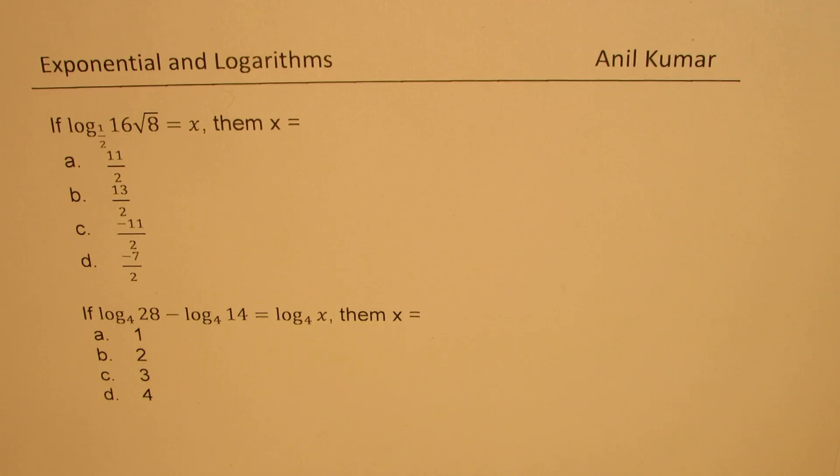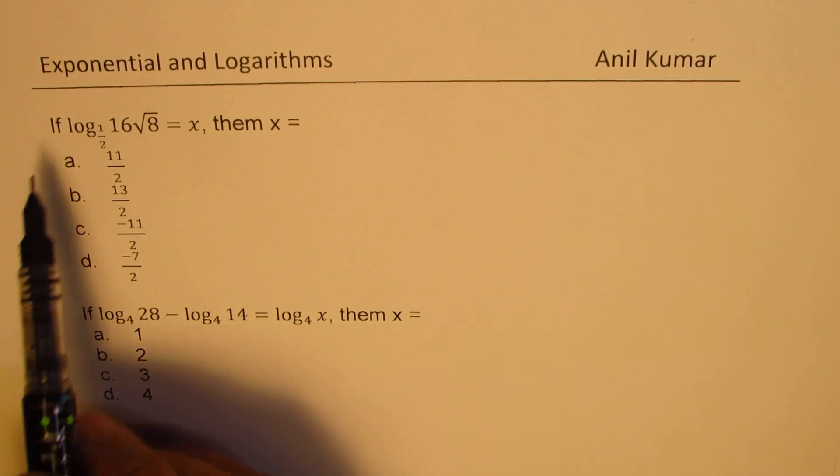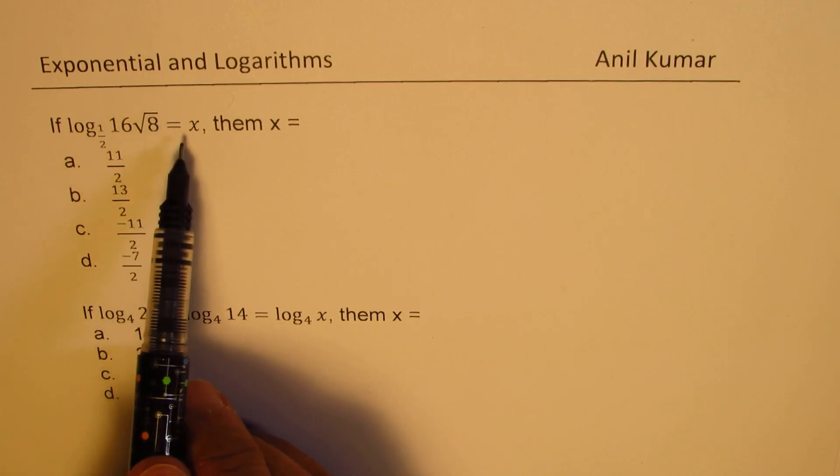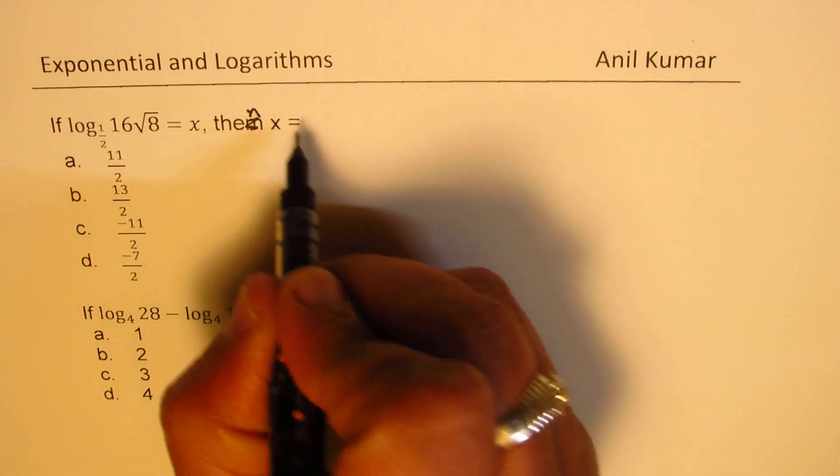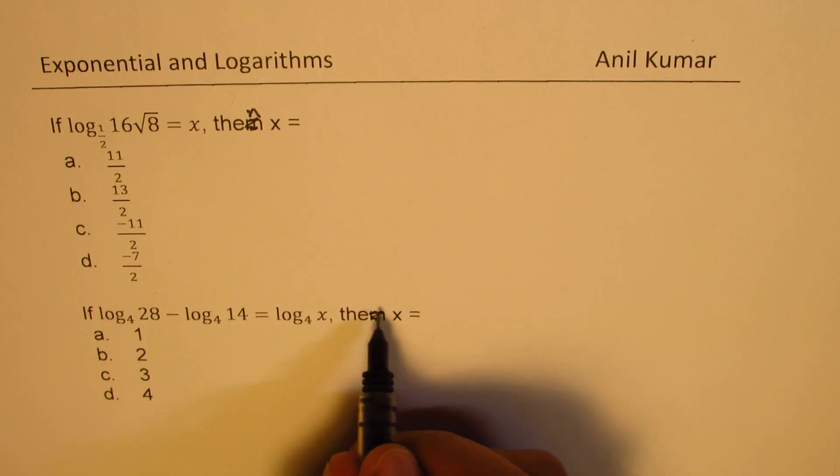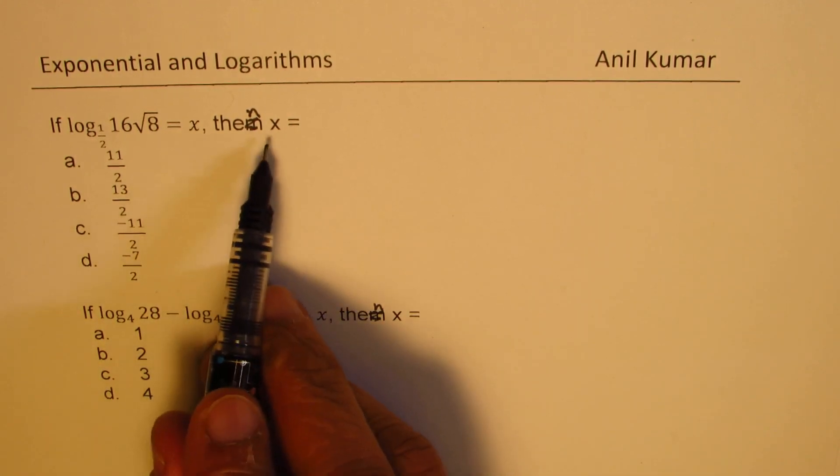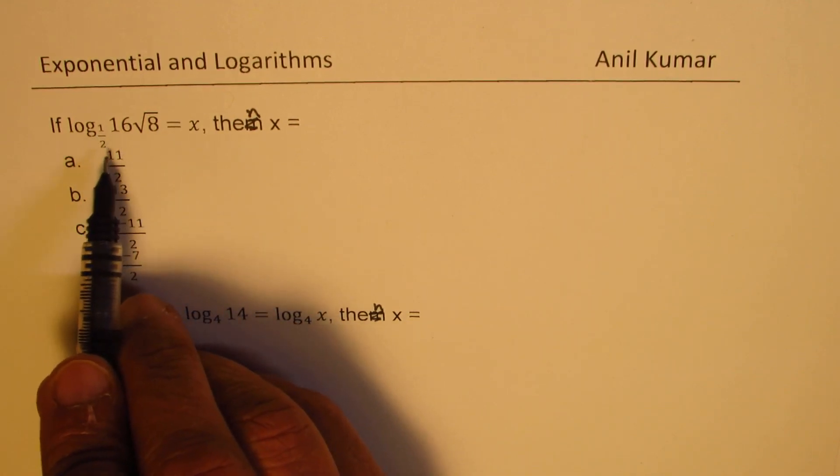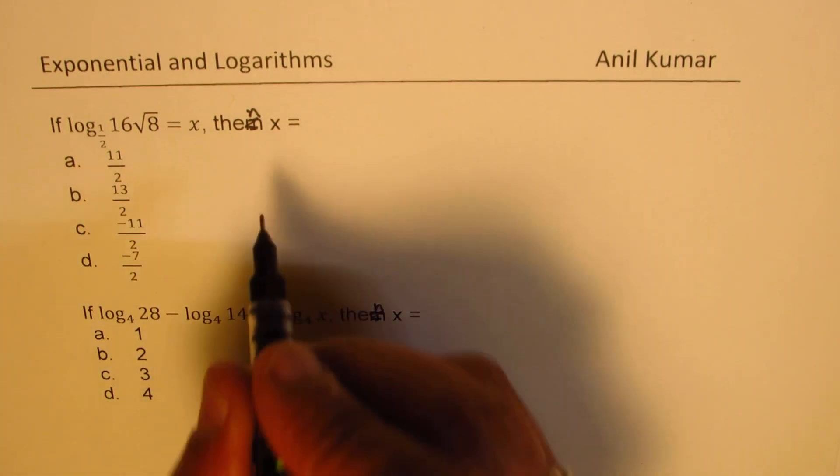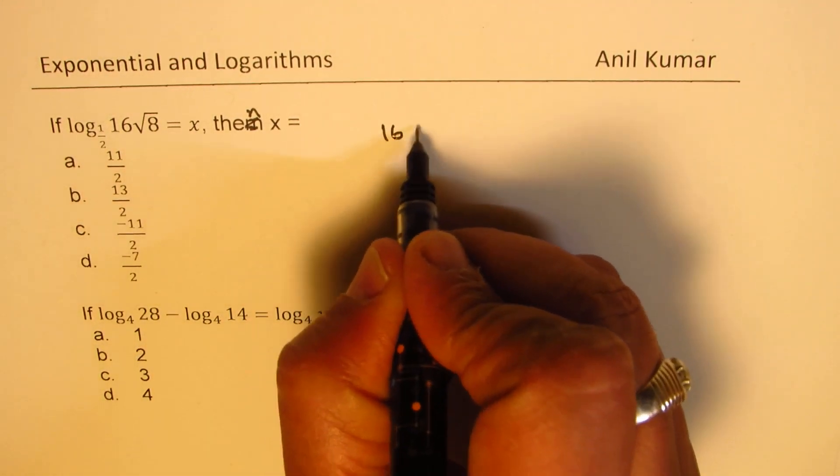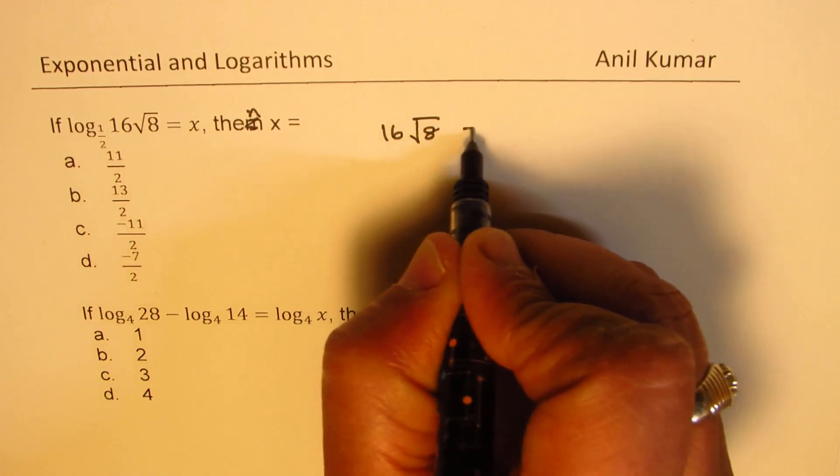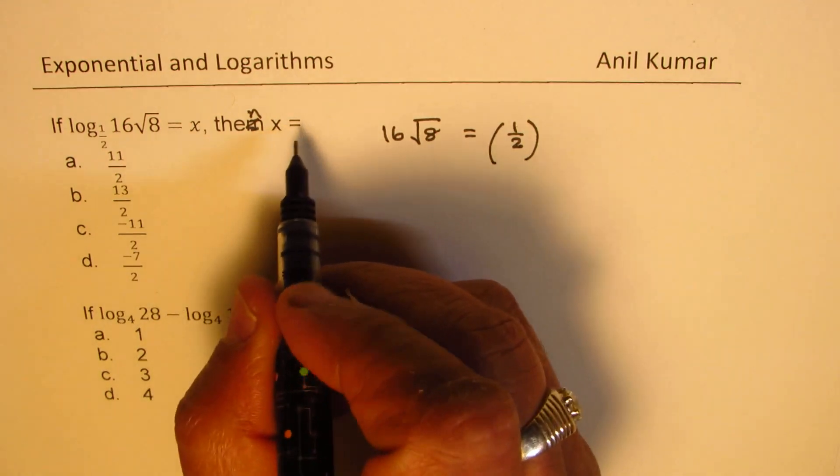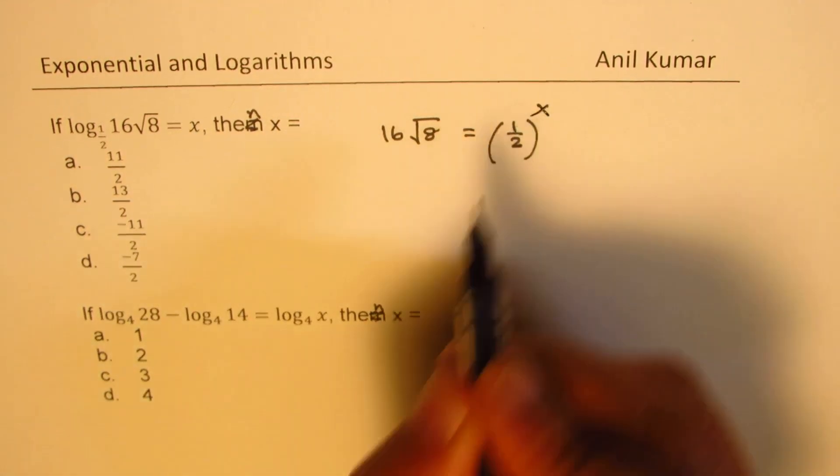Now we have, if log to the base half of 16 square root 8 is equal to x, then x is equal to what? We need to find the value of x. We could actually rewrite this as an exponential equation. So we get 16 square root of 8 is equal to half to the power of x.